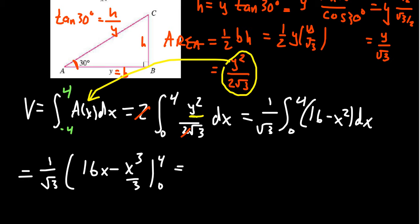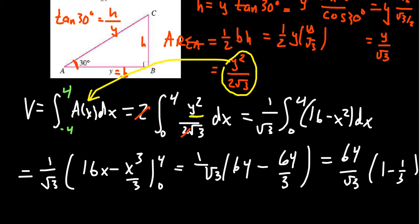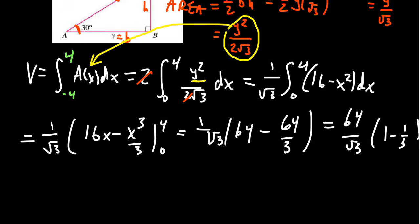Plugging in the 4, we're going to get 16 times 4, which is 64, minus 64 over 3. If you factor out the 64, which is common to everything, 64 over the square root of 3, we're left with 1 minus 1 third, the difference, which is 2 thirds. And so then in the end, we would get 64 times 2, which is 128 over the square root of 3 times 3, so 3 root 3. And so this would give us the exact volume of this wedge that we slice out of that cylinder from above.